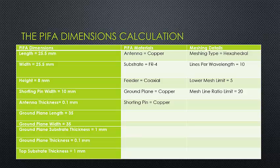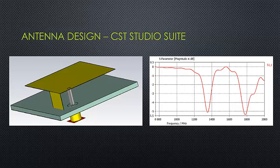We used copper for the antenna, FR4 for the substrate. The feeder was coaxial and the ground plane was also copper, as well as the shorting pin. This was our first antenna design using CST Studio Suite. The diagram shows a simple PIFA antenna with a wide shorting pin and a feeder probe going from the ground plane to the antenna.